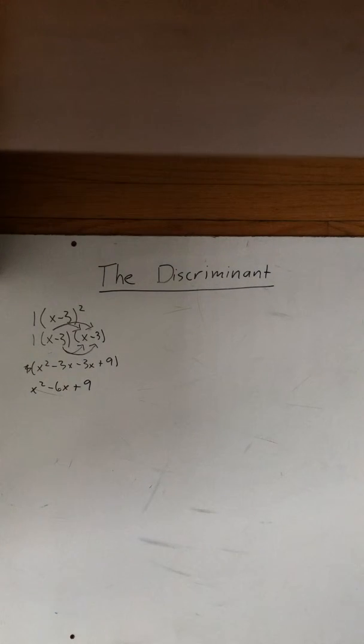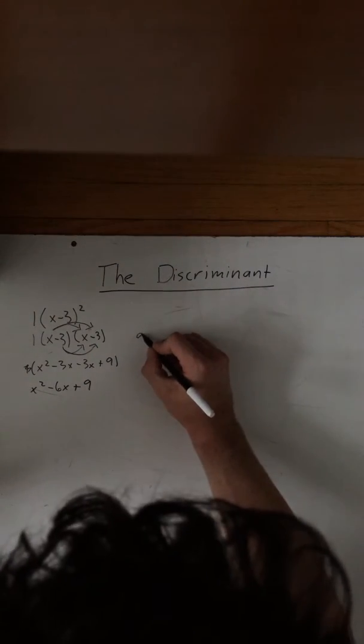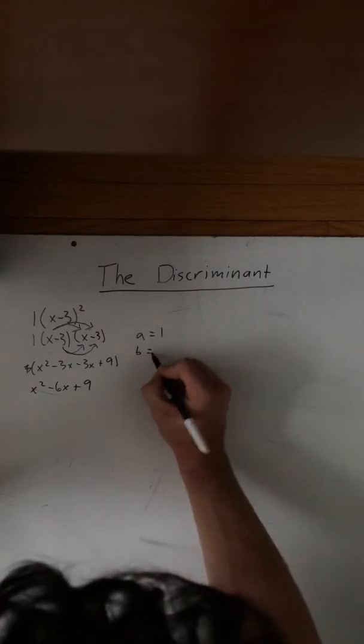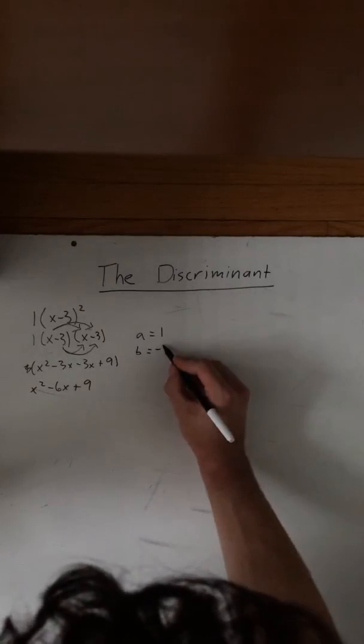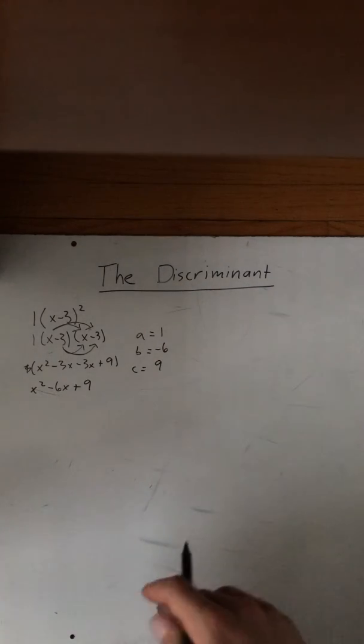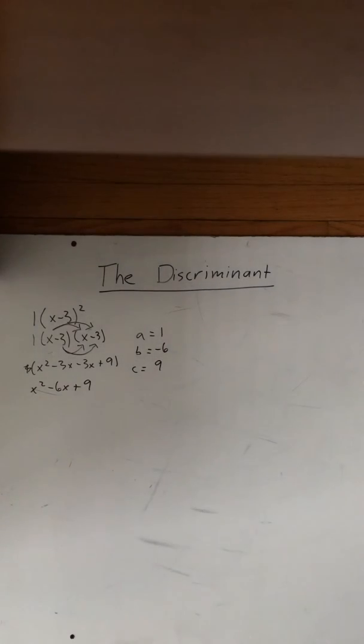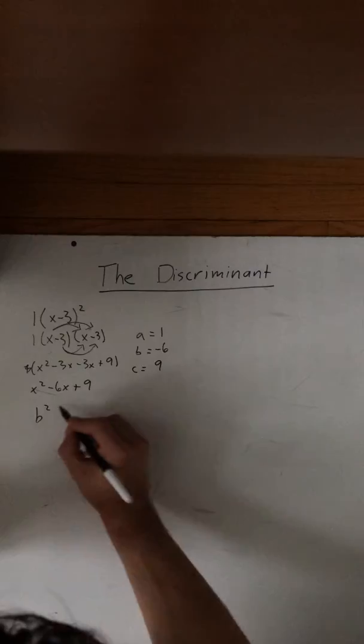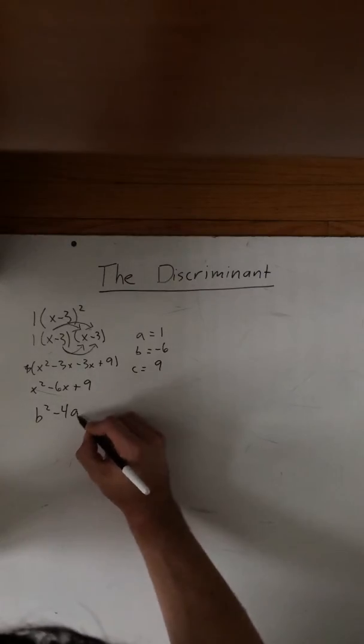Now from here this is where we can start to find our discriminant. So our a value in front of the x is equal to 1, our b value is negative 6 and our c value is 9. So now the formula for the discriminant is taken right out of the quadratic formula and it is only b squared minus 4ac.